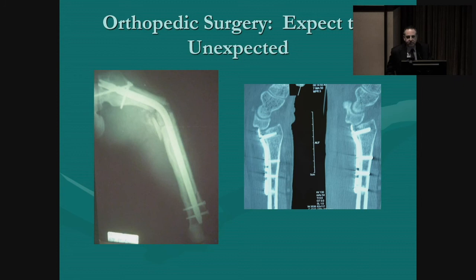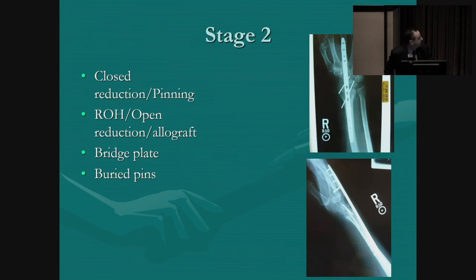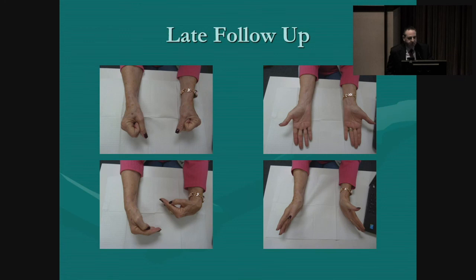In orthopedic surgery, you should expect the unexpected and have a plan. The plan was to address the lunate facet — sometimes that lunate facet fragment is so small there's no way to fix it stably, and this has received attention in two recent papers. We don't have complications in hand surgery — we have staged procedures. Stage two was back to the operating room: take out the plate, try to reduce the volar fragment again, put on a bridge plate, and pin the carpus back where it belongs. Stage three was go back and take out the hardware. The reduction held — late post-op x-rays showed bilateral distal radius fractures with the right wrist not moving quite as well as the left, as expected, but with good pronation and supination.